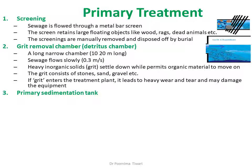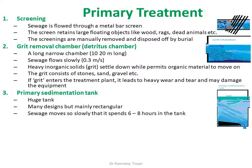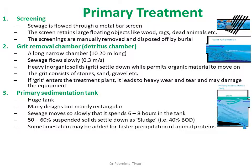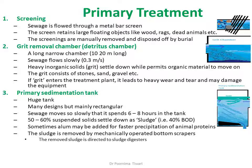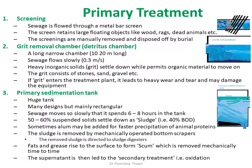After grit removal, sewage is sent to the primary sedimentation tank, which is a large tank, mainly rectangular in design. Sewage moves so slowly that it spends 6–8 hours in the tank, during which sedimentation occurs and 50–60% of suspended solids settle down as sludge. Alum may be added for faster precipitation of animal protein. The sludge is removed by mechanically operated bottom scrapers and directed to sludge digesters. Fat and grease rise to the surface forming scum, which is removed mechanically by scum skimmers. The supernatant is then led to secondary treatment for oxidation.